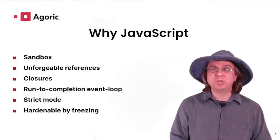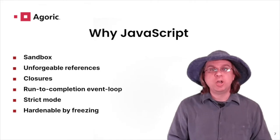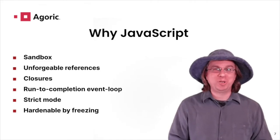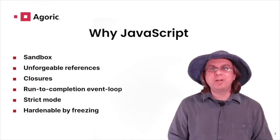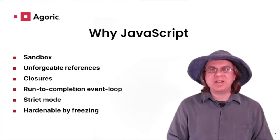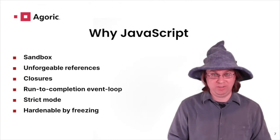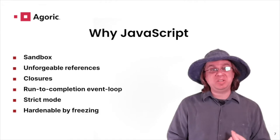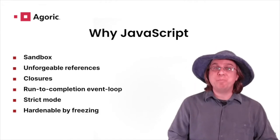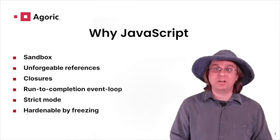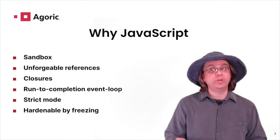And in a world where we can safely create interaction involving any number of strangers, new categories of software become possible. Though JavaScript was not originally intended to sandbox multiple potentially adversarial programs simultaneously, it has always had some convenient properties. And about 10 years ago, it gained the last remaining properties necessary to safely evaluate strangers' code without expensive static analysis or rewriting.